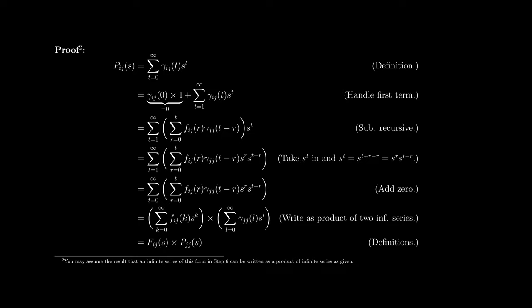We exploit the Cauchy product result to rewrite that double summation as the product of two infinite series. The first infinite series is Σ_{k=0}^∞ f_ij(k) · sᵏ, which is just the generating function F_ij(s). The second summation is Σ_{t=0}^∞ P(j→j in t steps) · sᵗ, which is just the pseudo-generating function P_jj(s). So we arrive at P_ij(s) = F_ij(s) · P_jj(s), and solving for F_ij(s) concludes the proof.